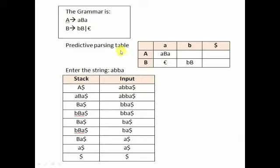Before we go for the program, we will see how we can construct a predictive parsing table for this particular grammar. The given grammar is A gives ABA, B gives BB, and B gives epsilon. For this, the predictive parsing table can be constructed as follows. We have two variables here: capital A and capital B.